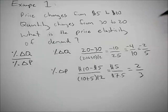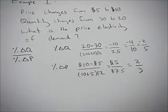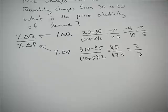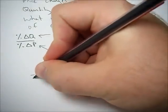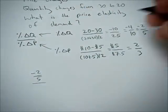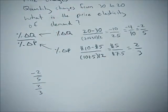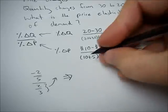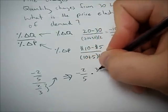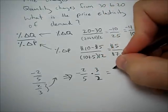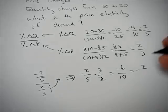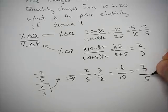Our percent change in quantity is negative 2 over 5. So when we plug those into our price elasticity of demand formula, our numerator is going to be negative 2 over 5 and our denominator is going to be 2 thirds. Using the invert and multiply rule, we flip the denominator and multiply: negative 2 fifths times 3 halves gives us negative 6 over 10, or negative 3 over 5, which is just negative 0.6.